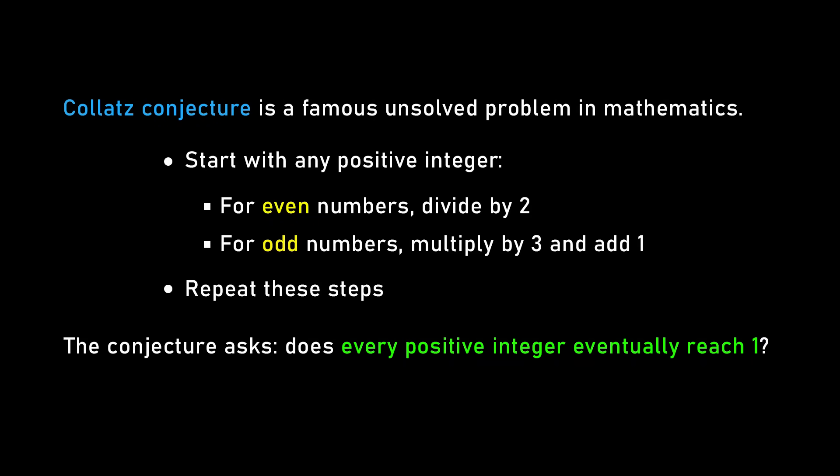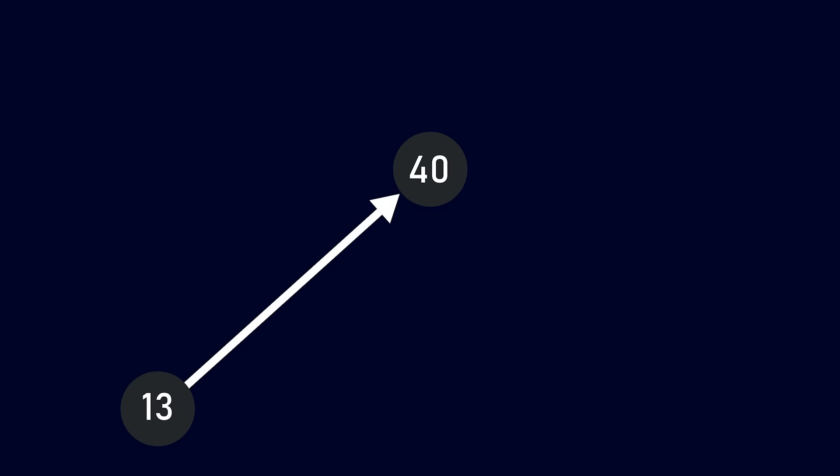You take any natural number, like say 13, and you apply the following procedure: if it's even you divide it by two, and if it's odd you multiply it by three and add one. So even numbers get smaller, odd numbers get bigger. It's a simple process for each case individually, and put together it's still reasonably simple — but then you ask what happens when you iterate it.